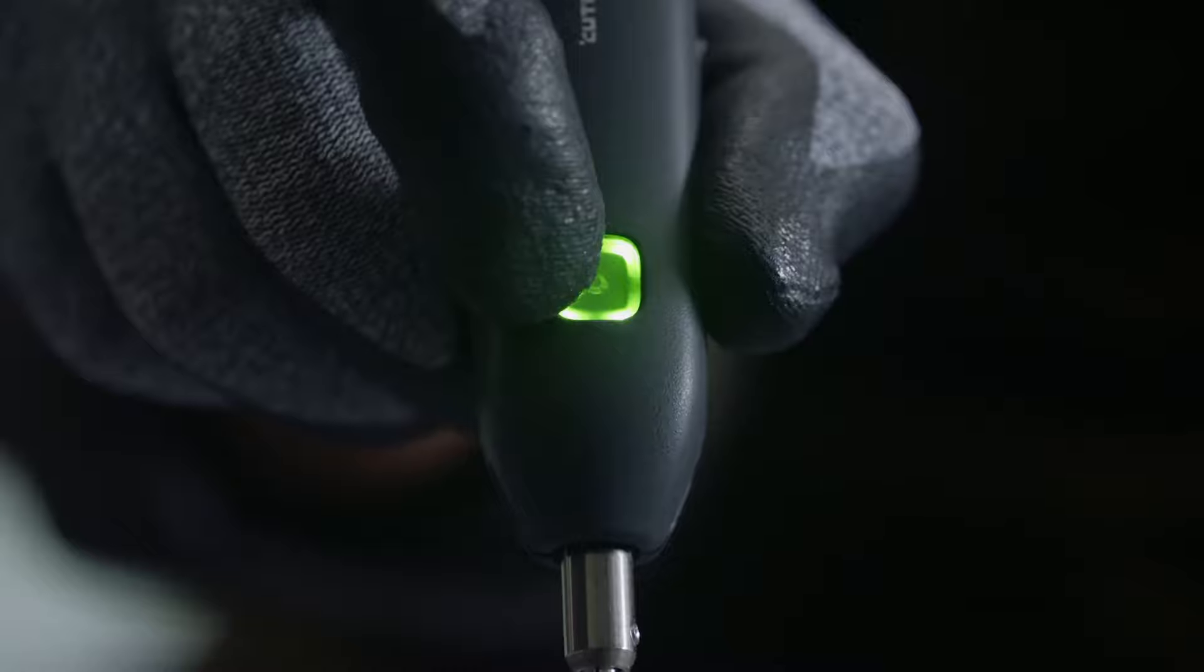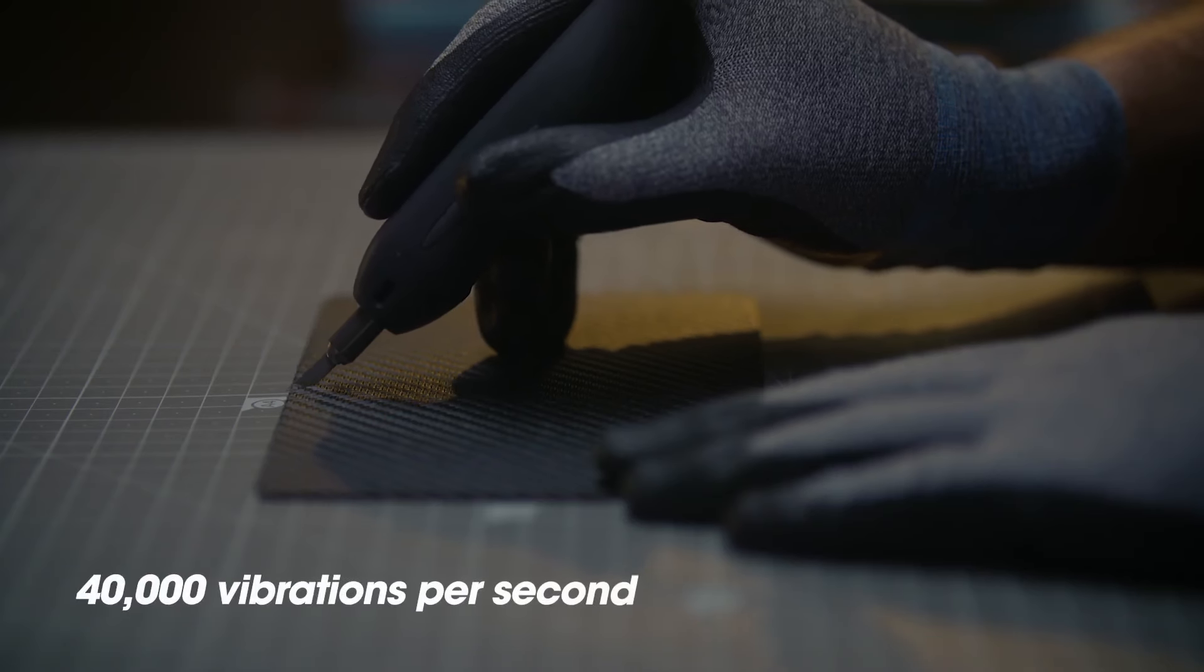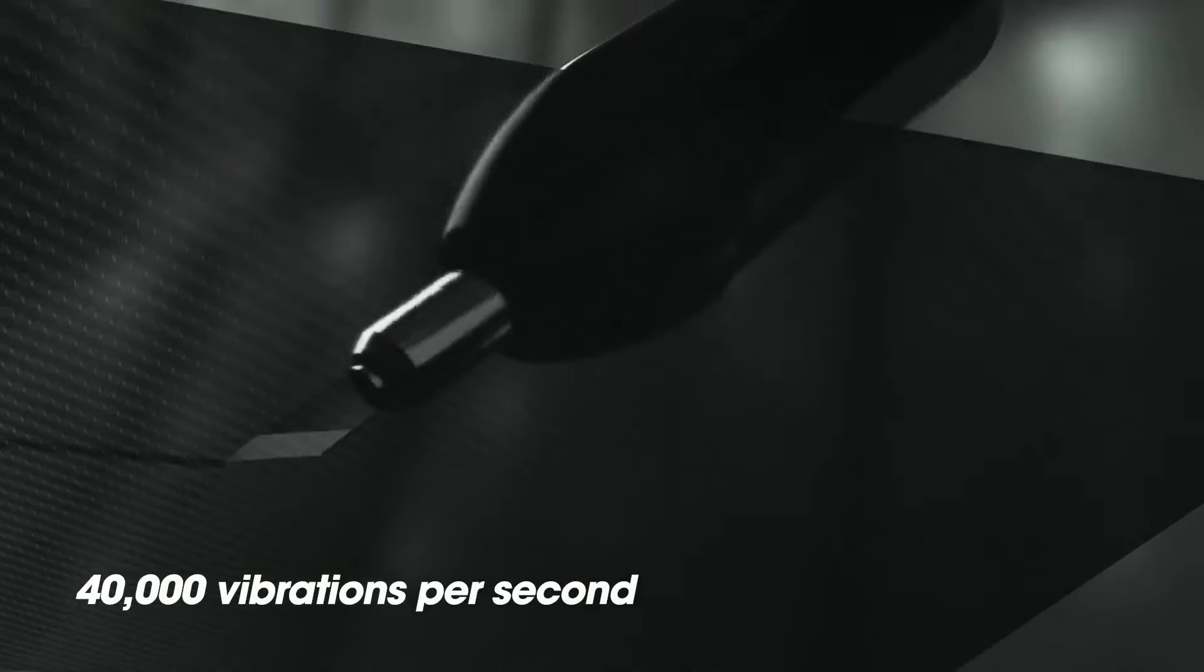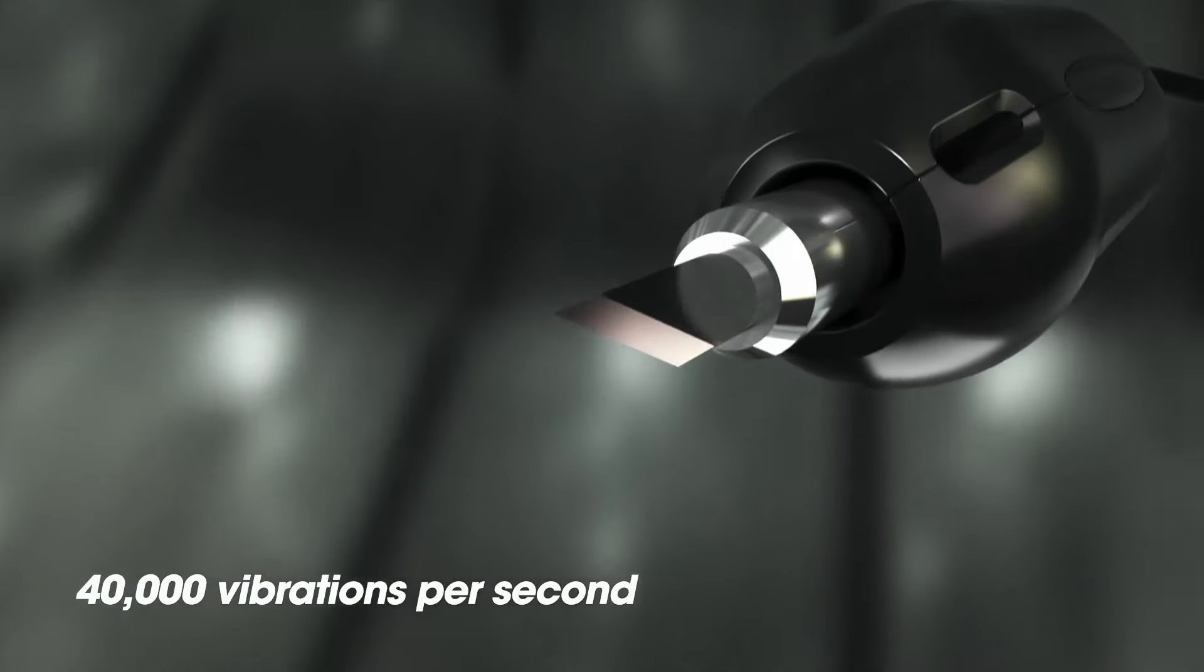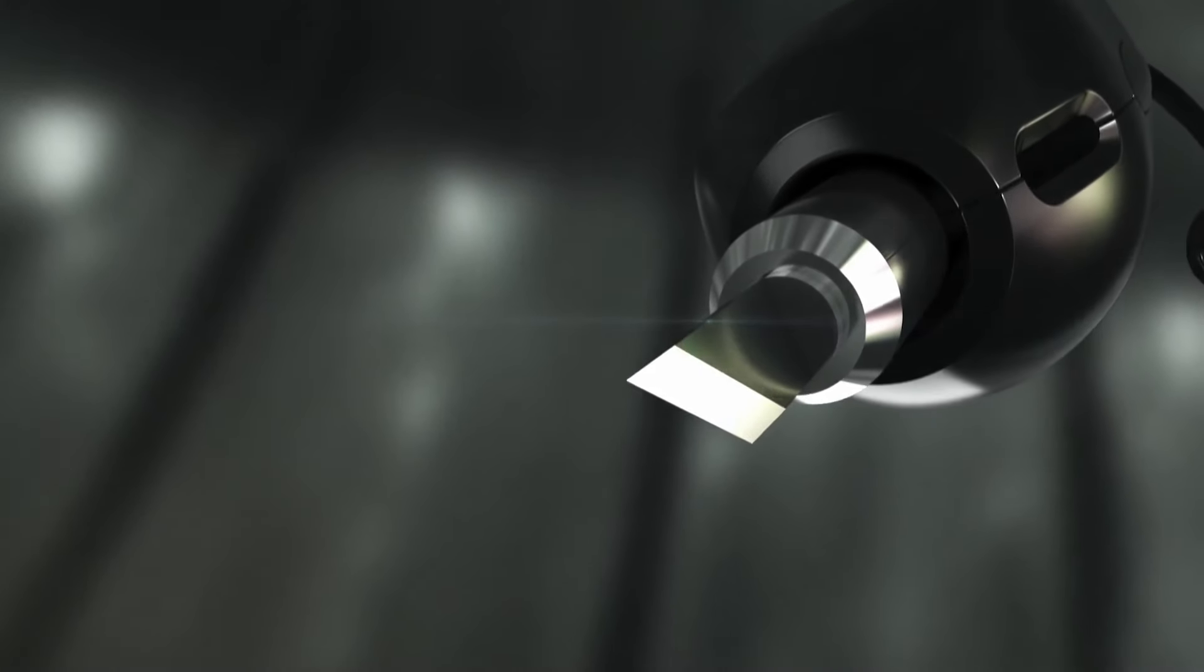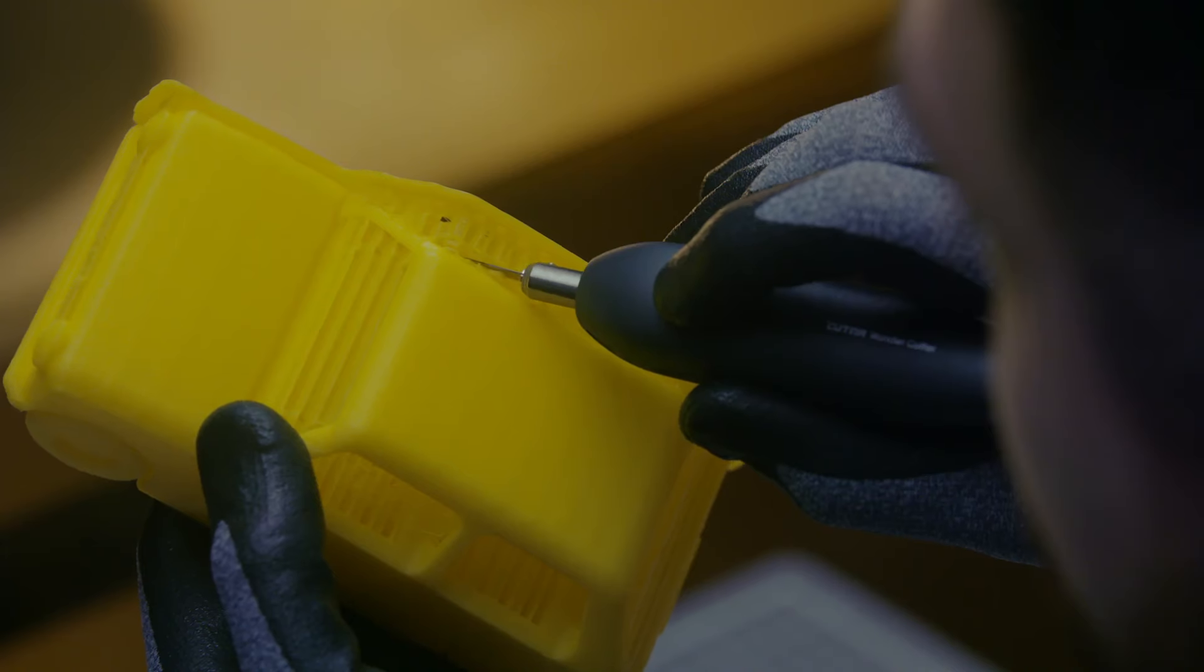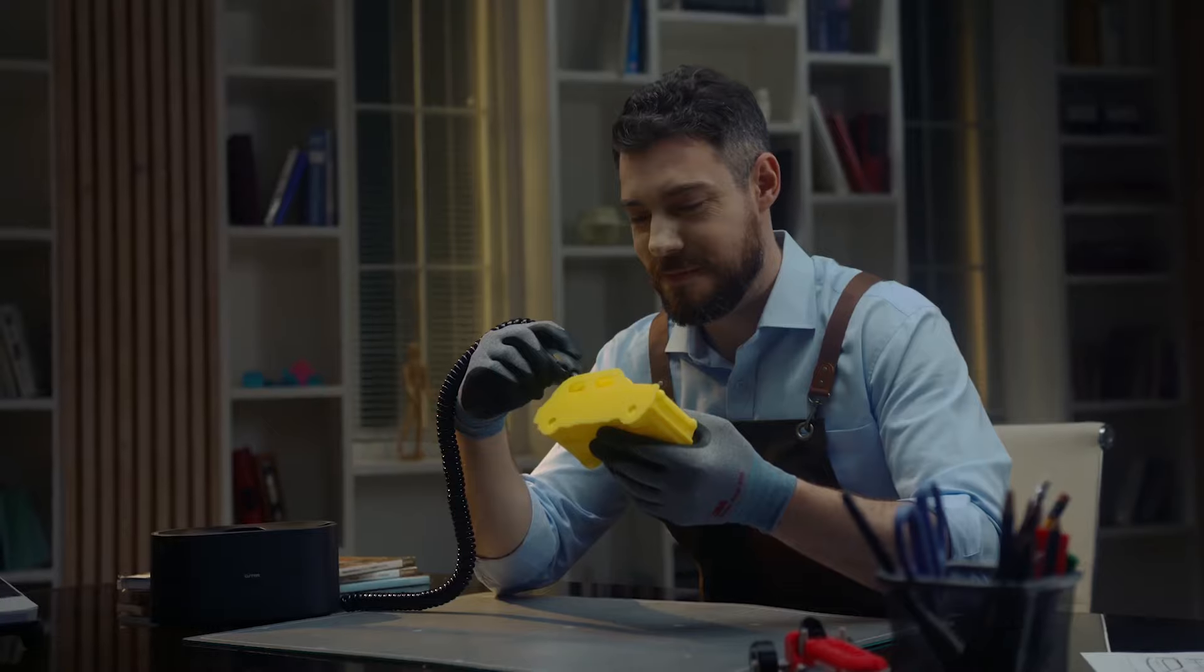COTRAX is fast and accurate, as it can cut objects by using 40,000 ultrasonic vibrations per second. And you can cut your materials more easily and smoothly.